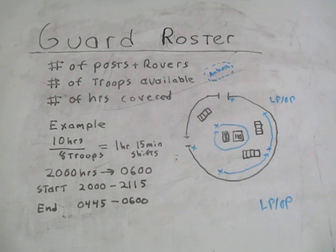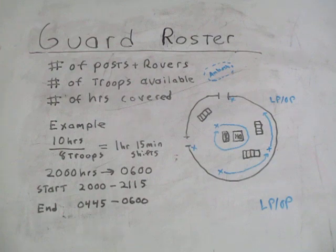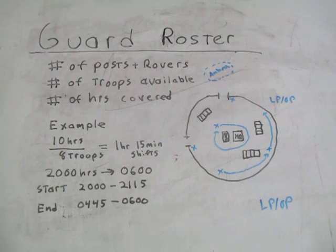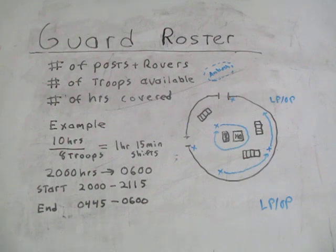If you had the second-to-last shift one night, the next night you'd get the last shift as a reward. On a vehicle crew or engineer squad, drivers and TCs would get either the first or last shift since they need the most sleep, and all the dismounts would fill the guard shifts in between.